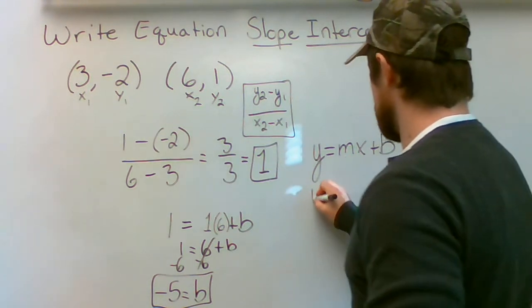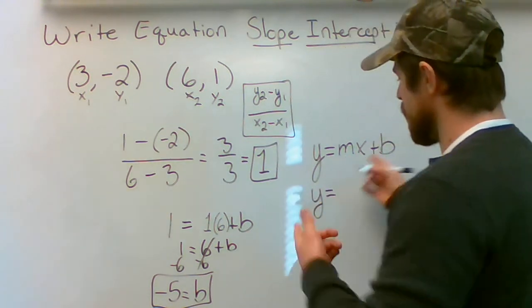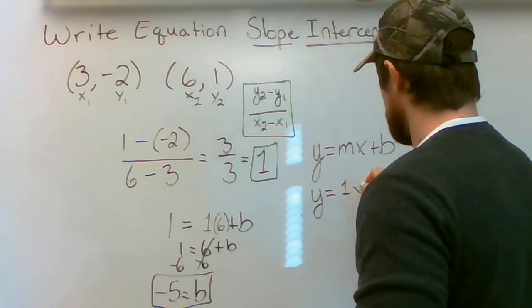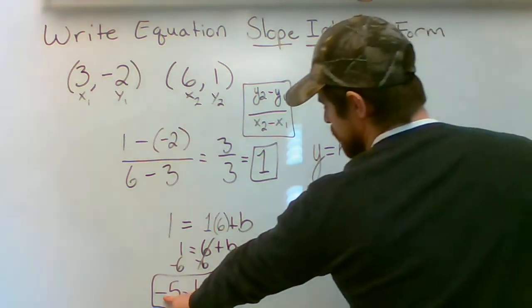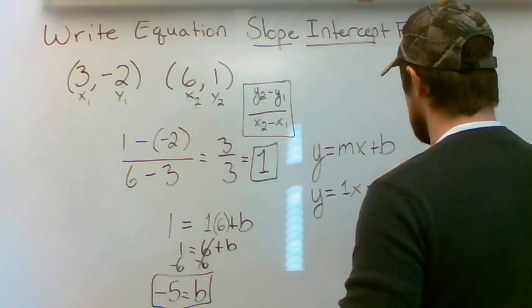M is the slope so we're going to say 1 there. Y equals 1x plus b. Well it's a negative 5 so I'm going to say minus 5.